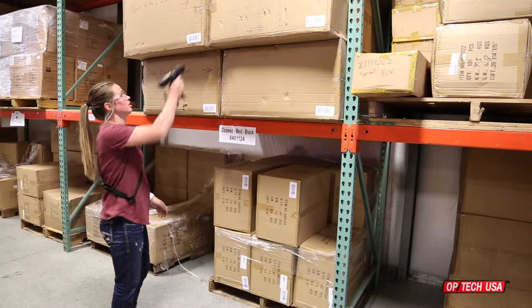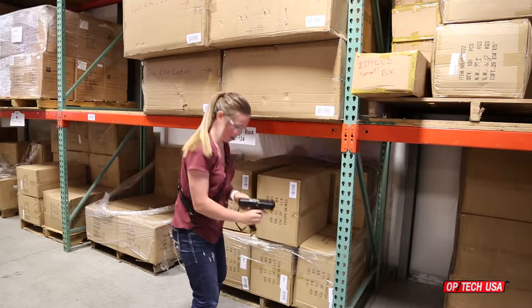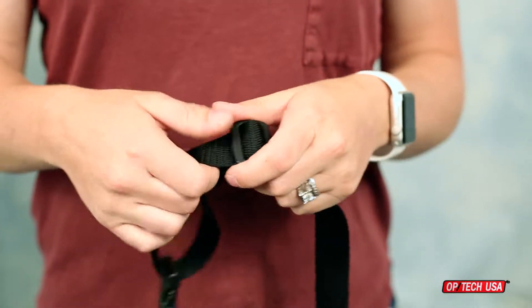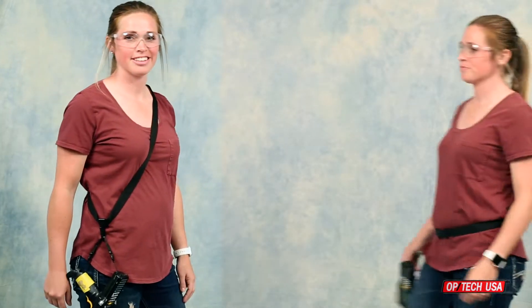OPTEC USA scanner hook strap and scanner hook adapter offer a maximum range of motion for warehouse staff. The tri-glide adjuster allows it to be worn in two different configurations, as a shoulder sling or around the waist.